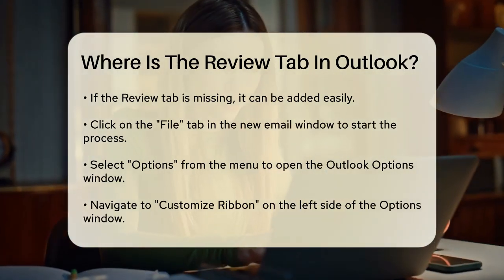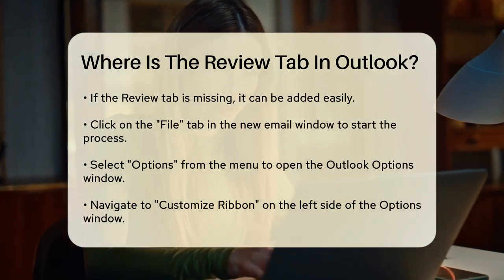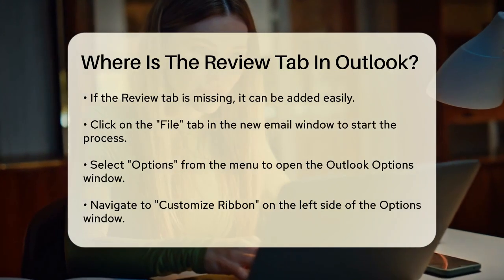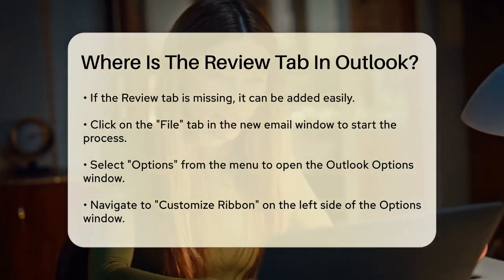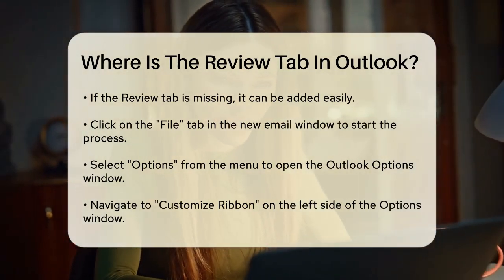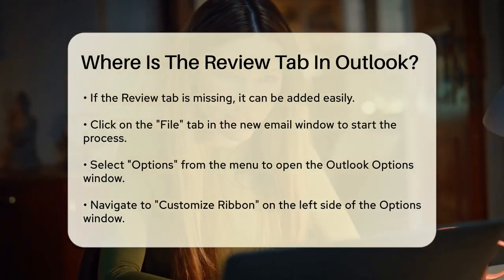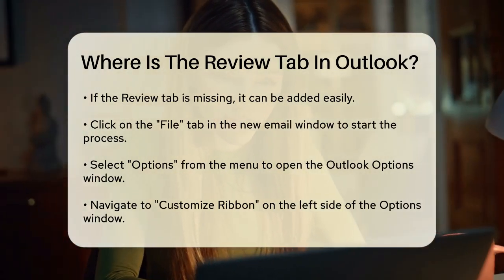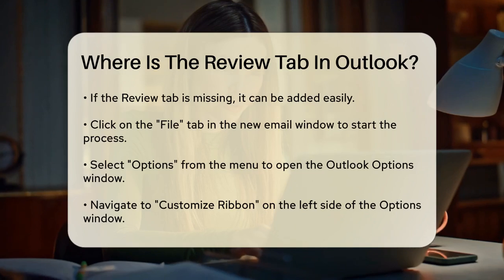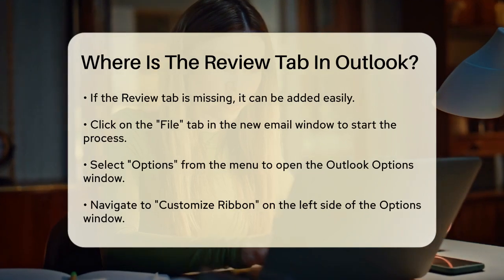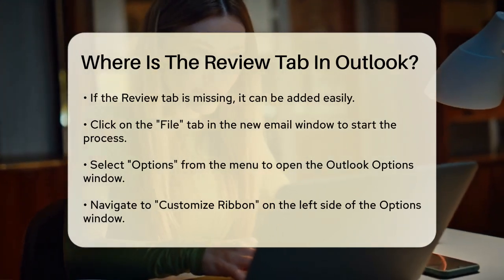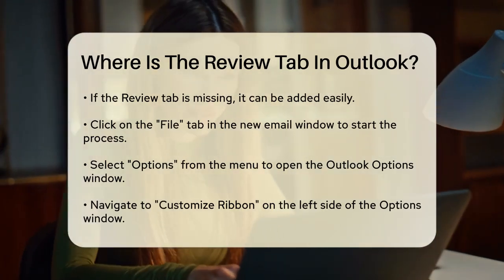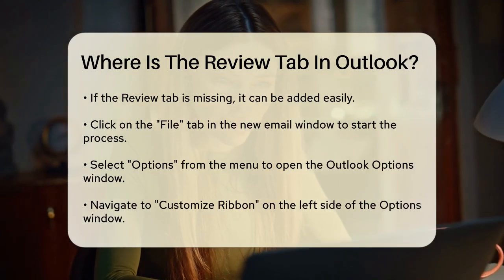If it's not there, don't worry — it's easy to add. To add the Review tab, go to the File tab in the New Email window, then select Options from the menu. This will open the Outlook Options window. On the left side, click on Customize Ribbon.